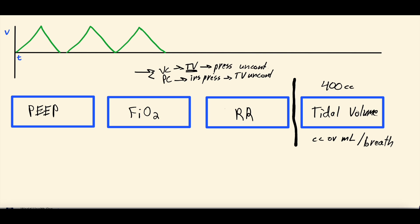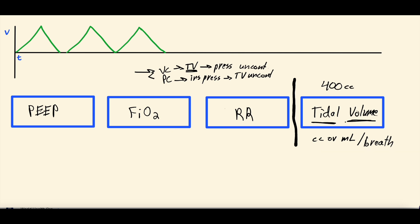What makes volume control different from pressure control is that you're setting a tidal volume you want the patient to get with each breath. Ventilators are smart — the patient has some control because the ventilator isn't just rigidly pushing that volume in regardless. There will be some variability from breath to breath depending on whether the patient is accepting that breath. But about this tidal volume, the patient will get with each breath, and that affects our scalars.